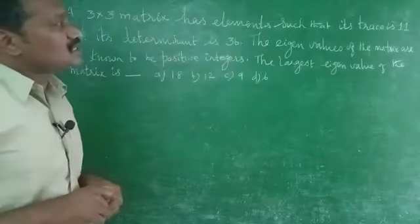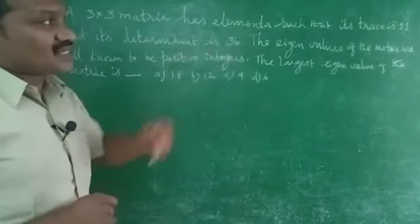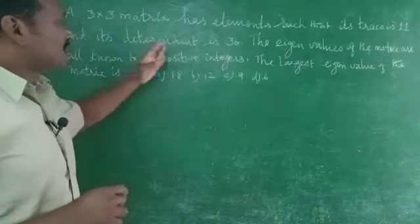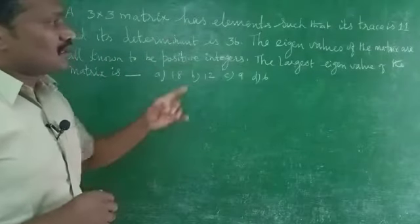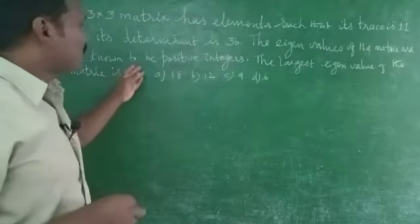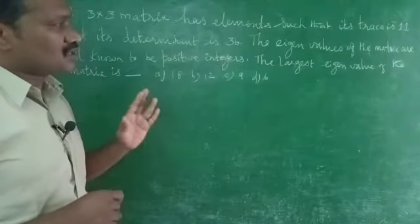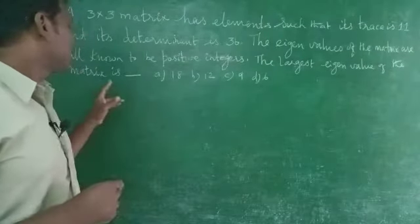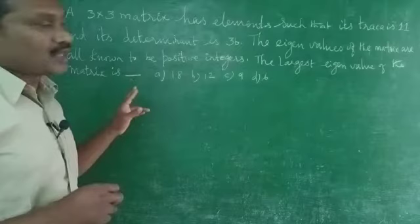A 3 by 3 matrix has elements such that its trace is 11 and its determinant is 36. The eigenvalues of the matrix are all known to be positive integers. The largest eigenvalue of the given matrix is...